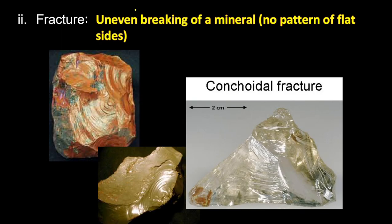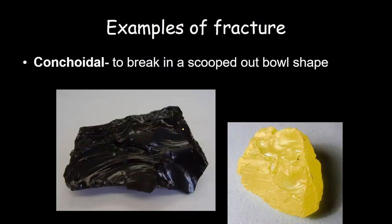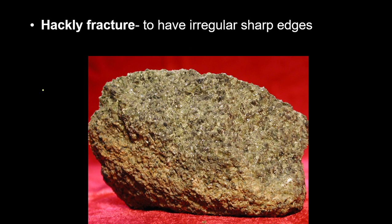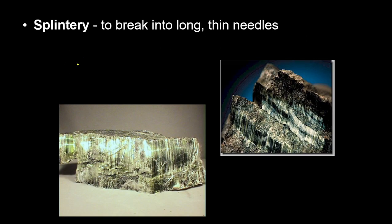The second type of breakage is fracture. Fracture is the opposite of cleavage — it is an uneven break with no flat sides and no pattern. Types of fracture include conchoidal fracture, where it's broken and scooped out with wavy sides — no squares, no cubes, no rhombuses. There's also hackley fracture, which looks bumpy with nothing even or similar.